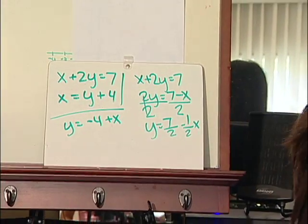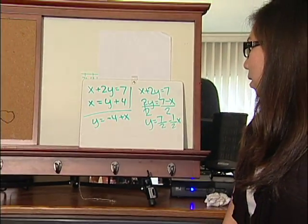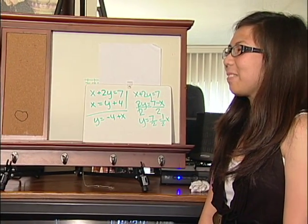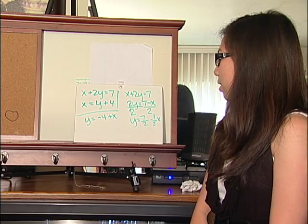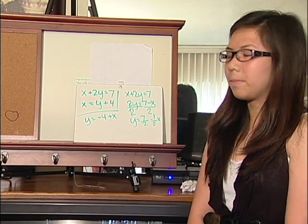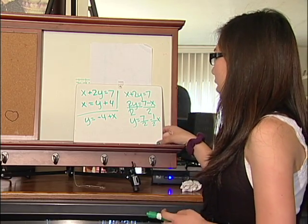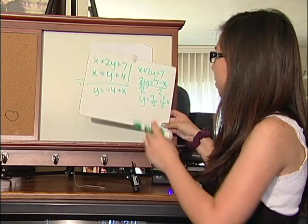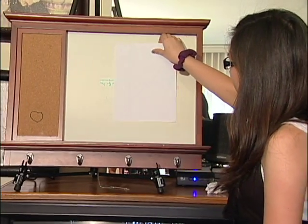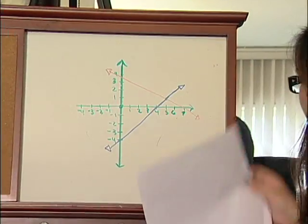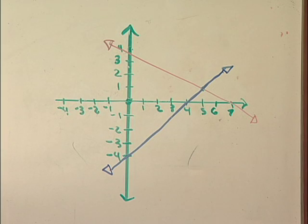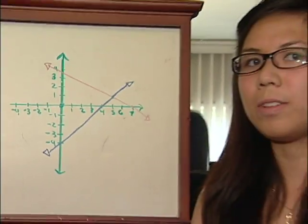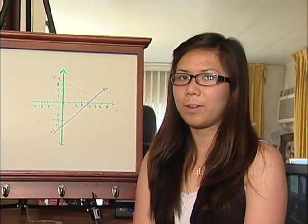Keep in mind that the coefficient of x is the slope, and the constant is the y-intercept. Then you would graph these two equations, and you would find the intersection point, which is (5, 1). So x equals 5 and y equals 1. And that is how you would solve the system by graphing.